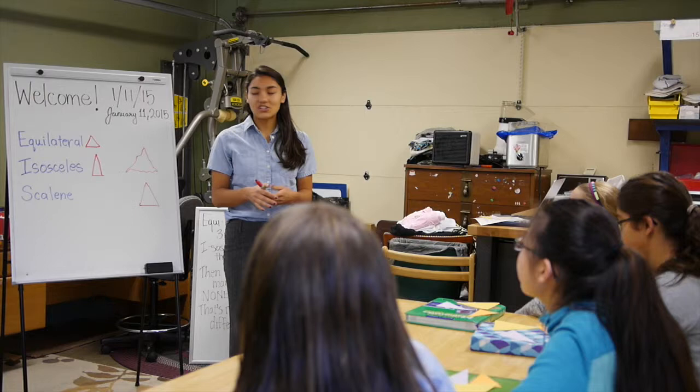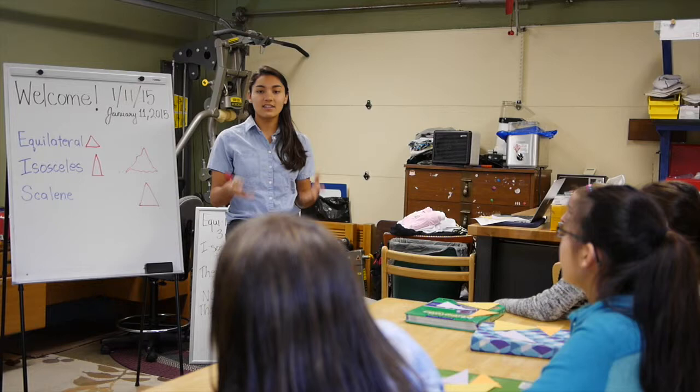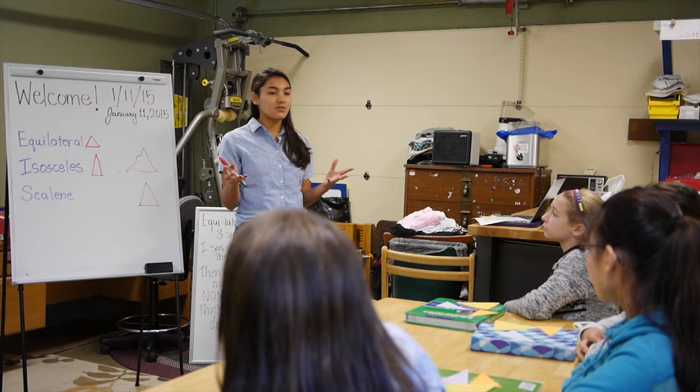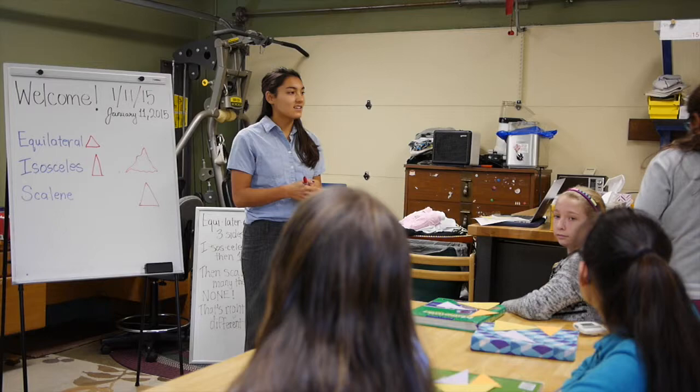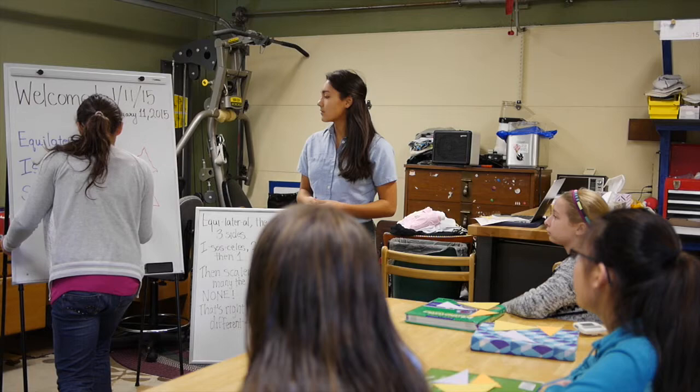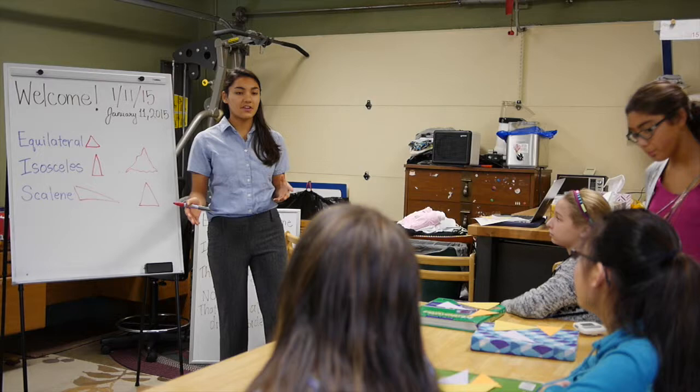What Eva did draw before is a scalene triangle. Can everyone say scalene? Scalene. Very good. A scalene triangle has three sides that are all different from each other — none of them are the same. Eva, can you come up and draw that triangle again? Nice job. So this one has three sides that are all different from each other. That is a scalene triangle.